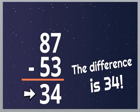So, the difference is thirty-four. Entonces, la diferencia es thirty-four. The difference, la diferencia, es el resultado de una sustracción, de una resta. That means that eighty-seven minus fifty-three equals thirty-four.